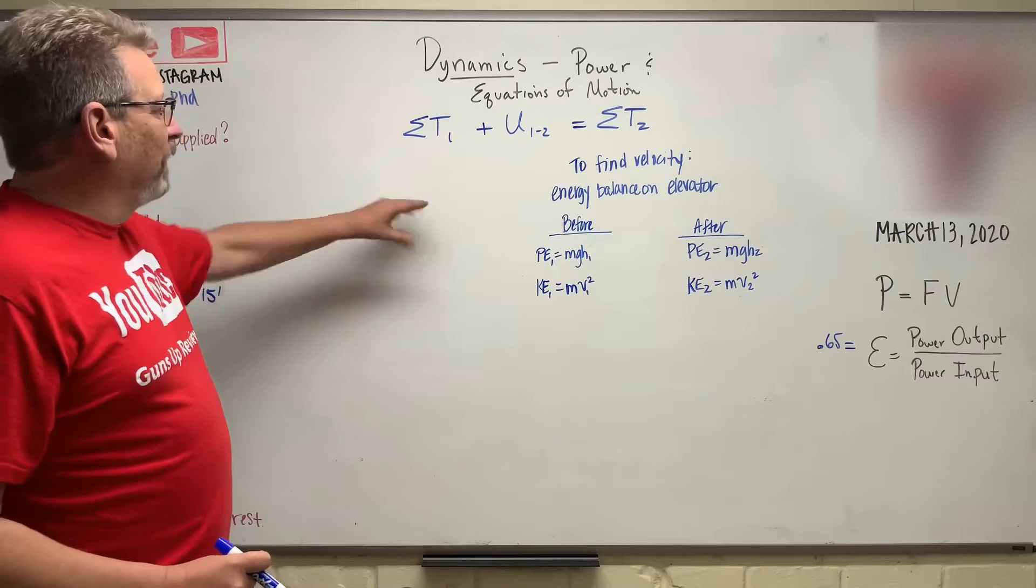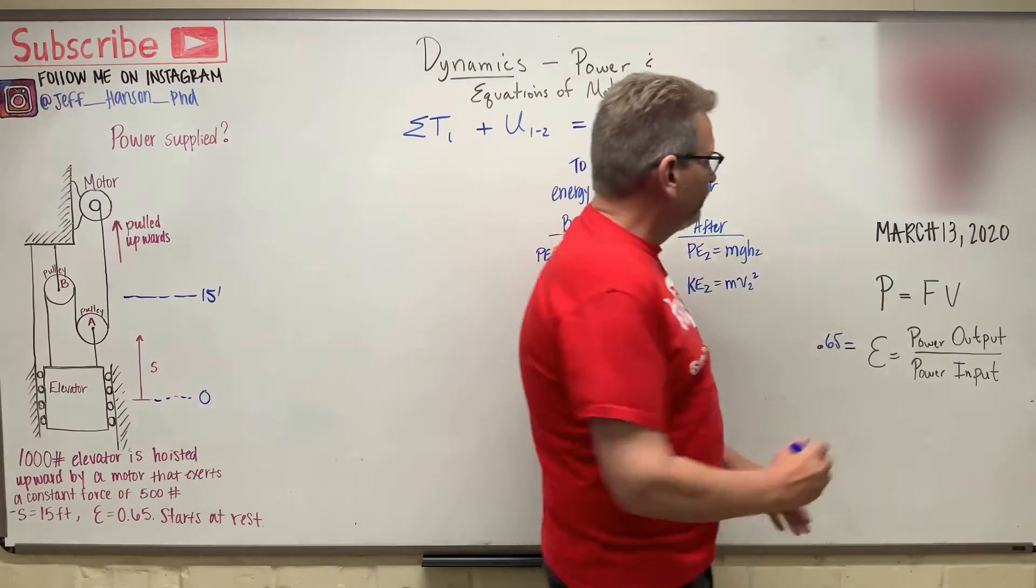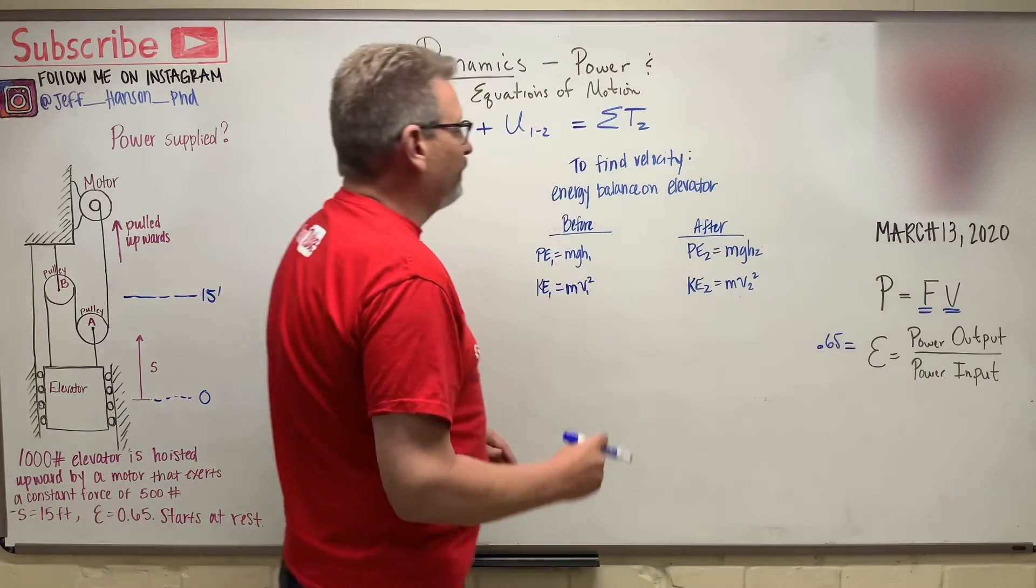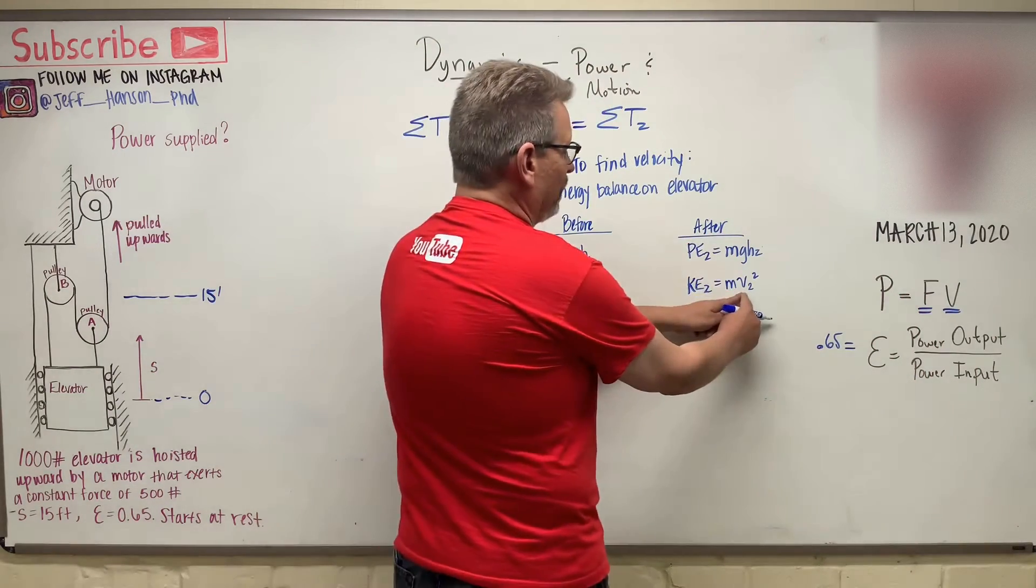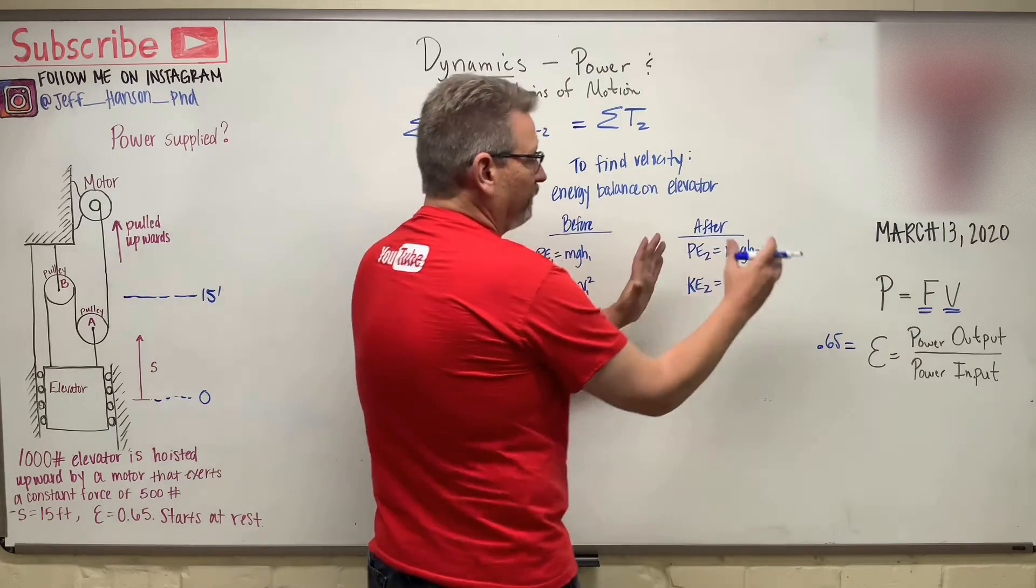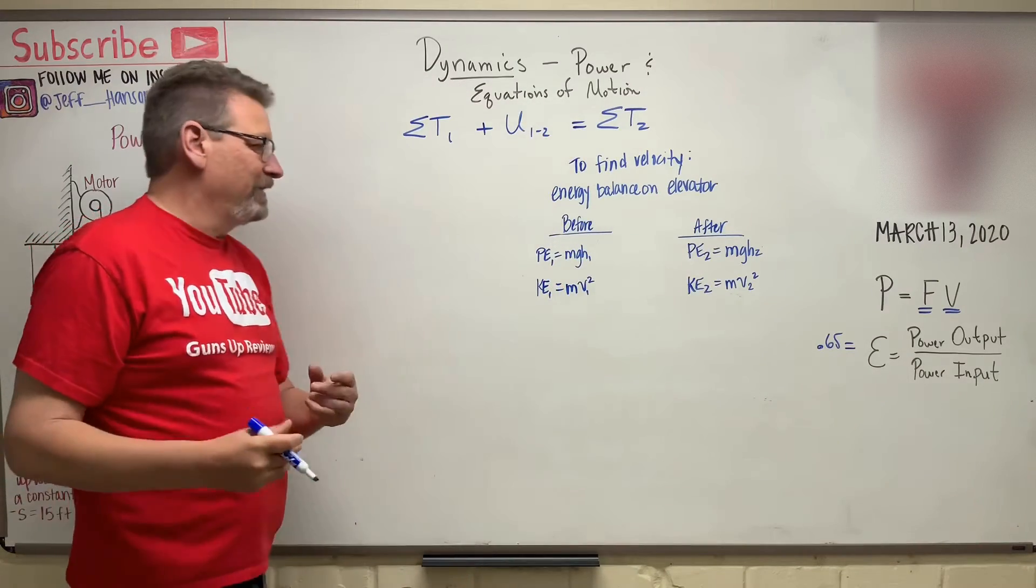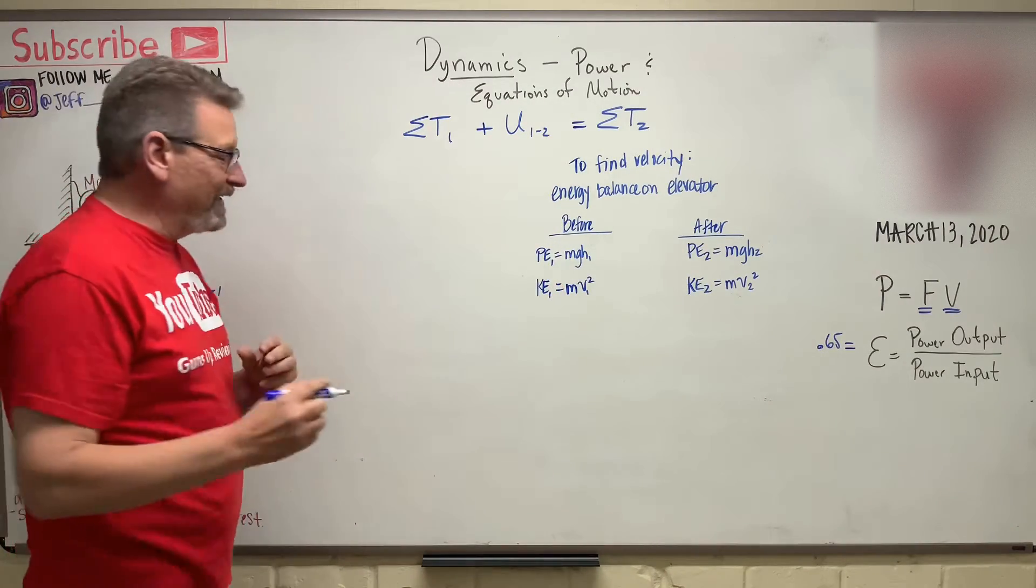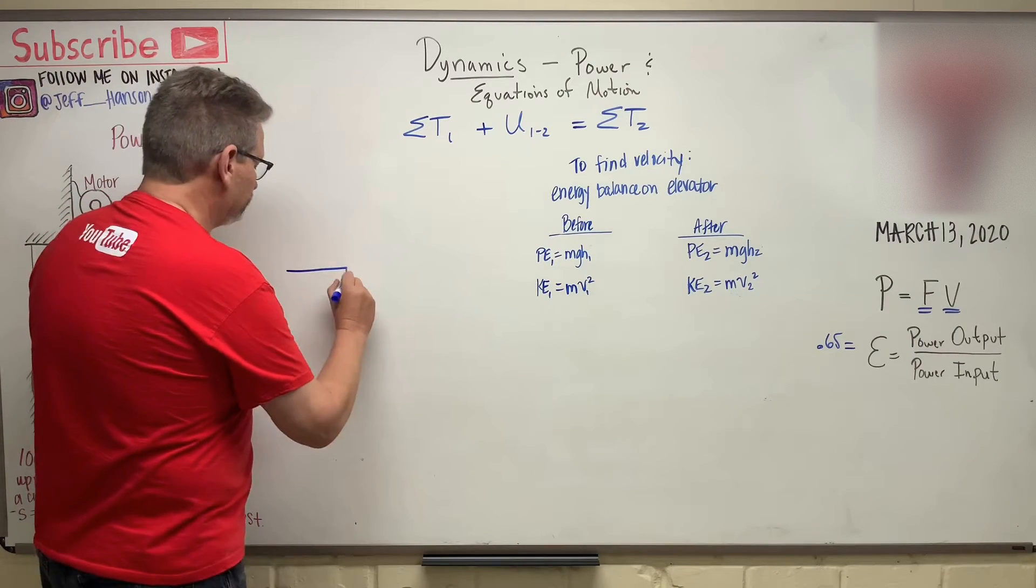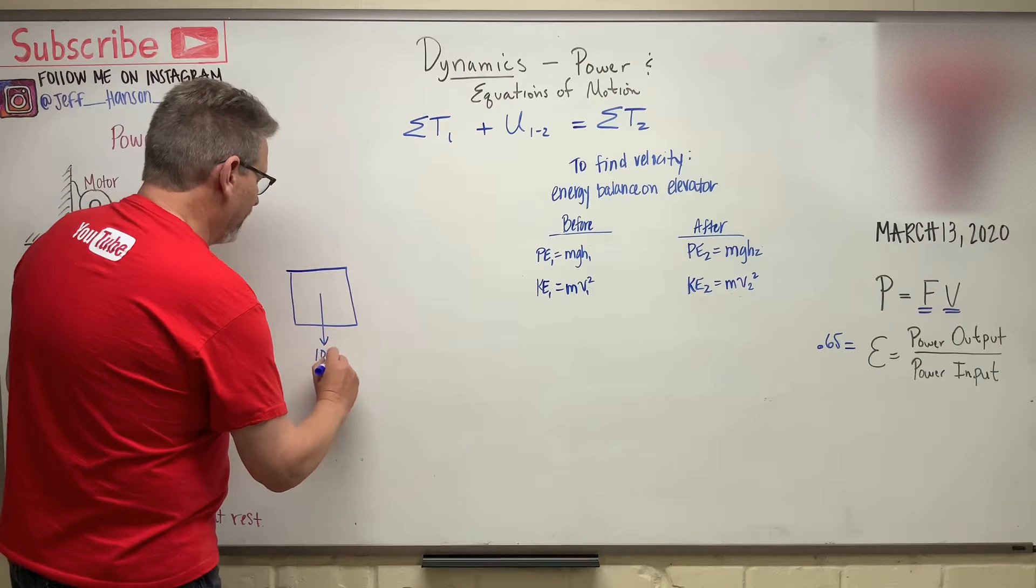So let's see if we can fill all this out. Now the first thing we need, we need force. We need this guy, and we need that guy. Now the velocity is going to come from right here. It's going to come from these Vs over here. So that's where the V is going to come from, but where is that force going to come from? What is the force on the elevator? So let's look at the elevator by itself. Now we're going all the way back to statics here, so draw good free body diagrams. So here's the elevator. It's 1,000 pounds.